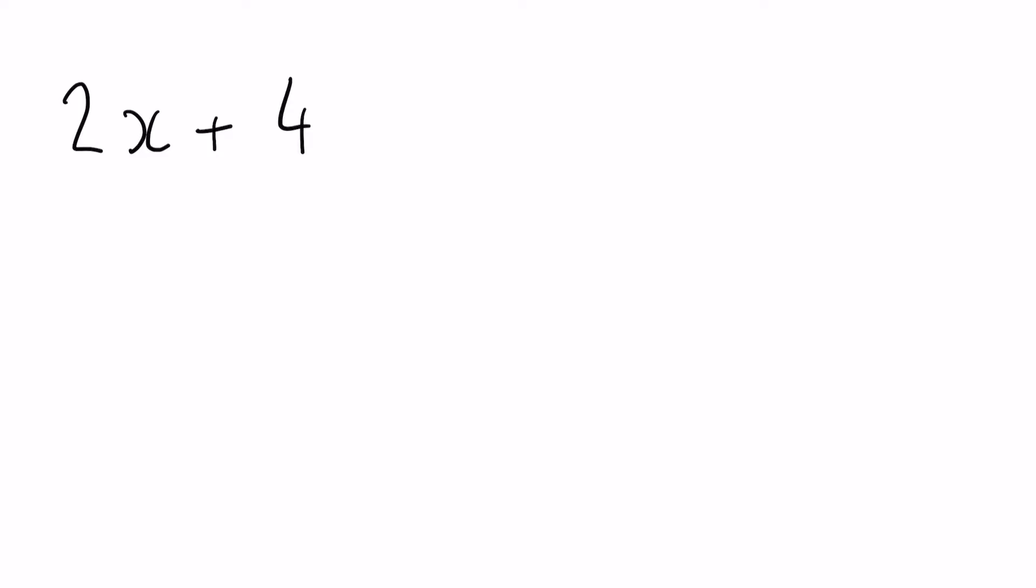When we are expanding double brackets, there is often a number on the outside that is common with both of the numbers within the brackets. This time we need to look for a number or a letter that is common in both terms. A term is for example 2x or 4 in this case.